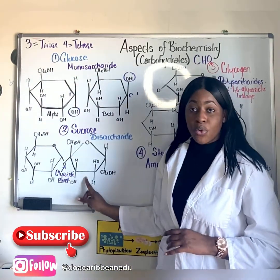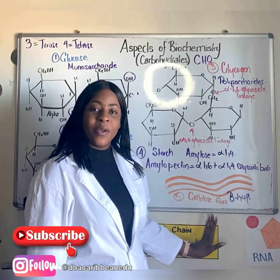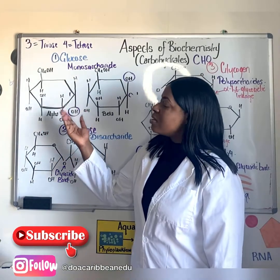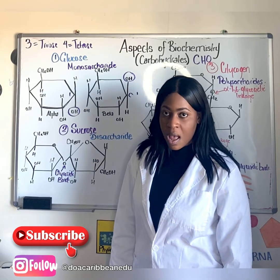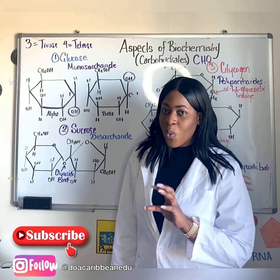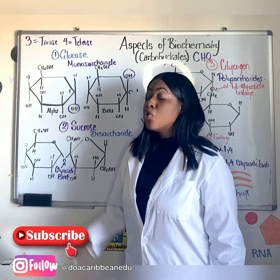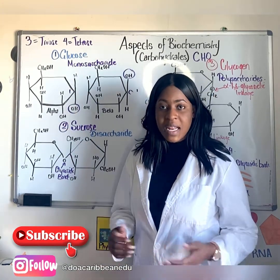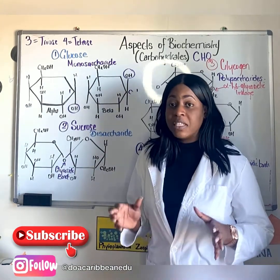The five carbohydrates are glucose, sucrose, glycogen, starch, and cellulose. Let's start with glucose. Glucose is synthesized in green plants during the process of photosynthesis — carbon dioxide and water react to form glucose and oxygen. Glucose is the major source of energy for many living organisms, and it can exist in its straight chain form or its ring form.